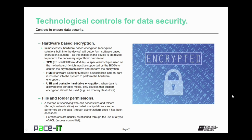Encryption can also occur at the hardware level — this is called hardware-based encryption. In most cases, hardware-based encryption will outperform software-based encryption solutions. The reason is the chipsets used in hardware-based encryption are optimized to perform the necessary algorithmic calculations for the encryption. There are several different types of hardware-based encryption. There is TPM, that's Trusted Platform Module — a specialized chip is used on the motherboard, which must be supported by the BIOS, that contains the cryptographic keys and algorithms required to perform the encryption.